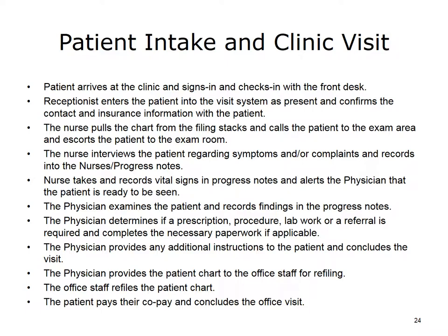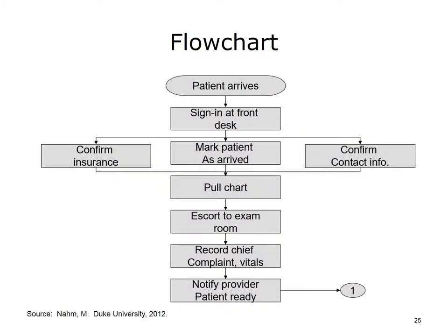Next, use the standard symbols and draw a flowchart that depicts the steps. The process steps depicted on this slide include: patient arrives at the clinic; patient signs in and checks in with the front desk; the patient is marked as present; their contact and insurance information are confirmed; the chart is pulled; the patient is escorted to the exam room; chief complaint and vitals are recorded; provider is alerted that the patient is ready to be seen. This flowchart is continued on the next slide.